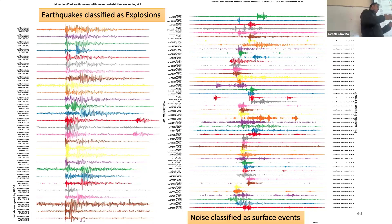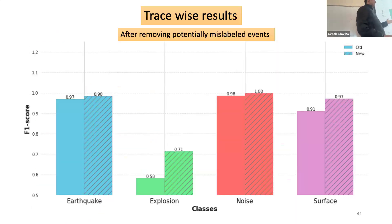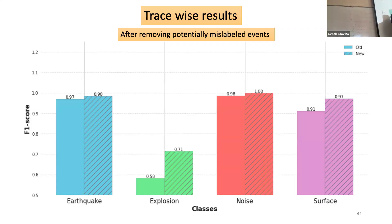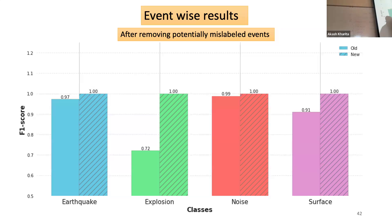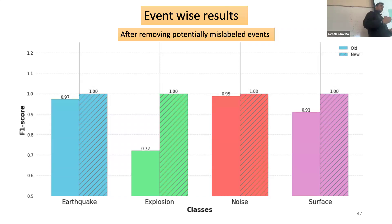I refined my catalog by taking all misclassified events identified with high probability and removing them, then retraining my model. This produced a substantial increase in explosion accuracy and surface event performance. Most importantly, when considering event-wise results, we get perfect performance — F1 score of 1 — for each class when training with the refined catalog and considering multiple stations. This is significant.